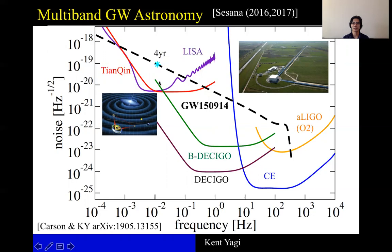And this is called multi-band gravitational wave observation, that you can detect gravitational waves from the same source using different detectors at different frequencies.